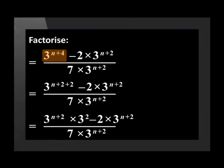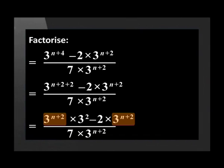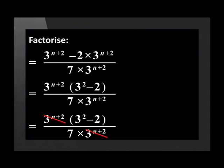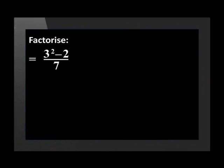3 to the power of n+4 can be rewritten as 3 to the power of (n+2)+2, which equals 3^(n+2) times 3^2. This makes the common factor of 3^(n+2) easy to see, so we take it out. With one term in the numerator we can cancel 3^(n+2) with the denominator, leaving 3 squared minus 2 in the numerator, which is 9 minus 2, over 7 in the denominator.